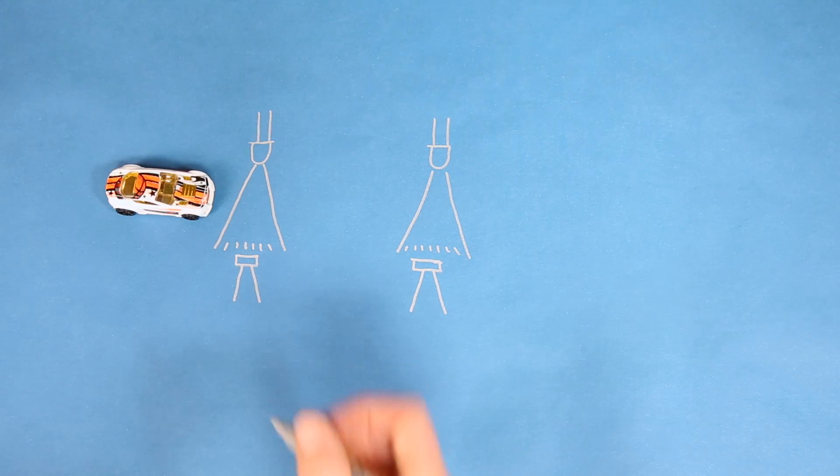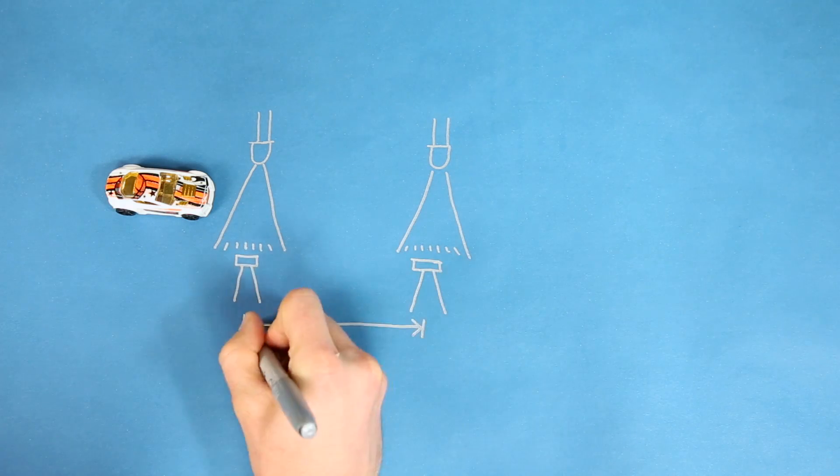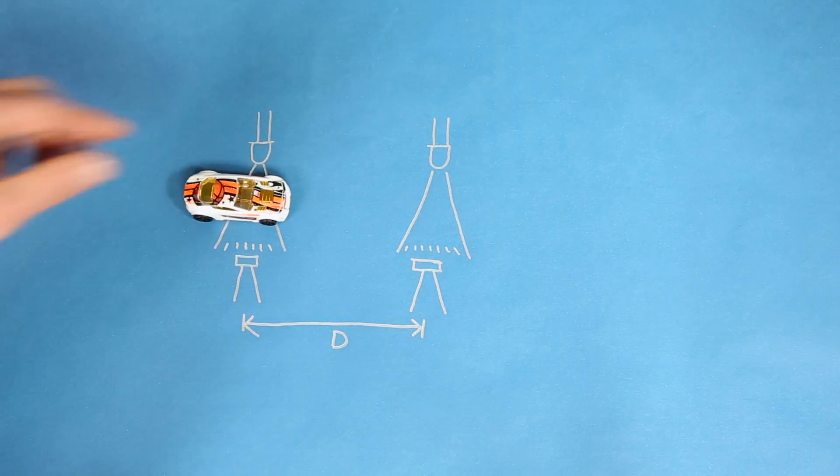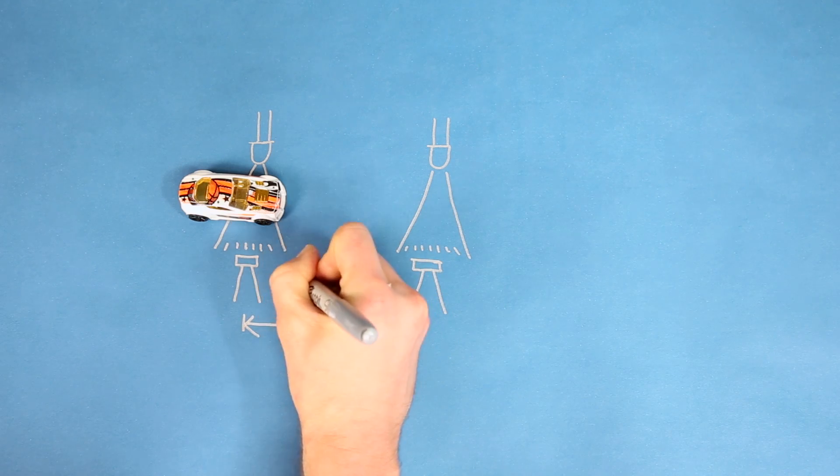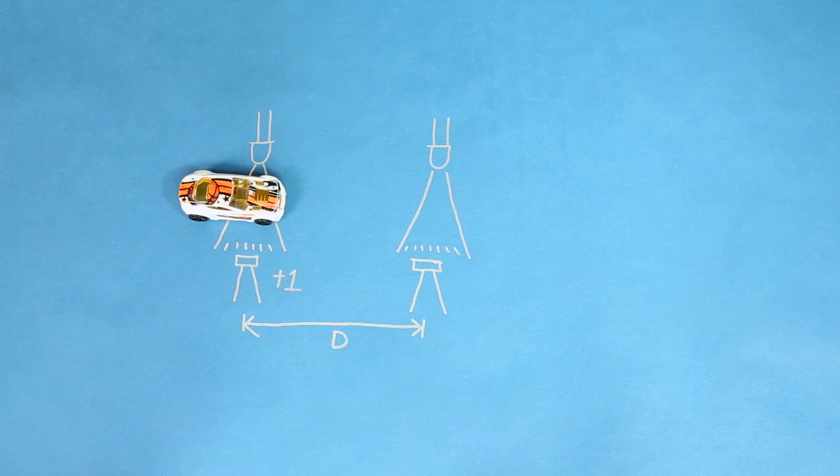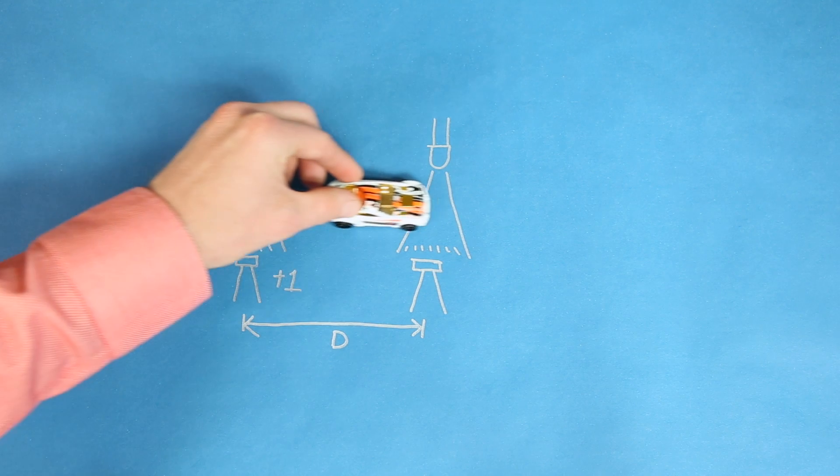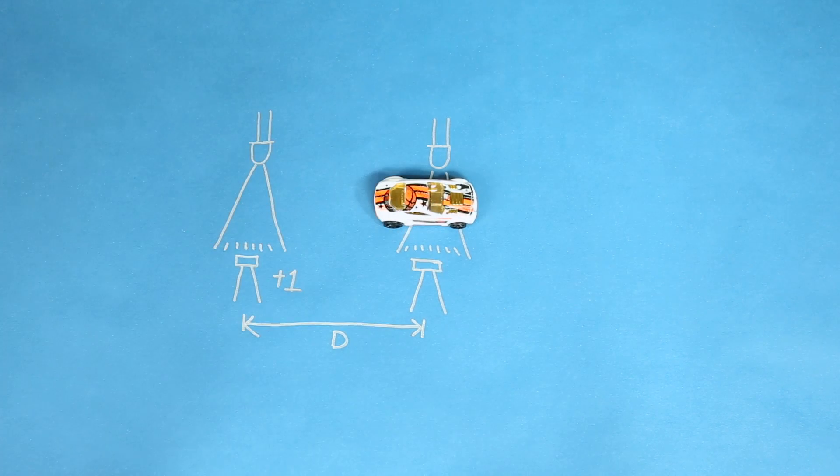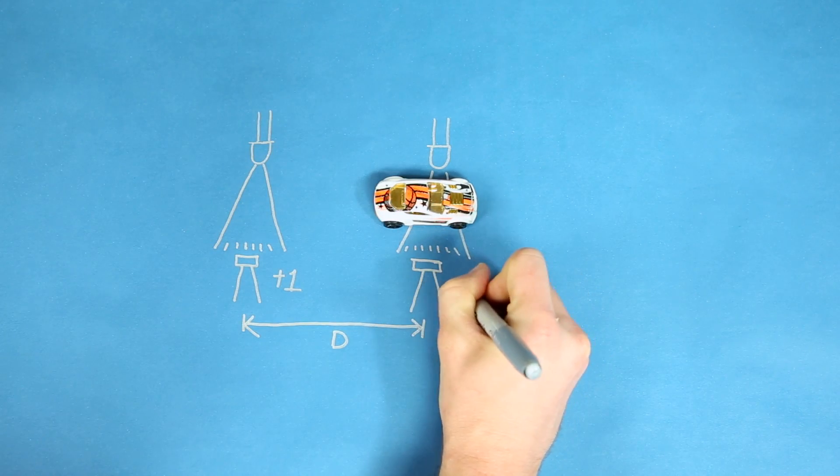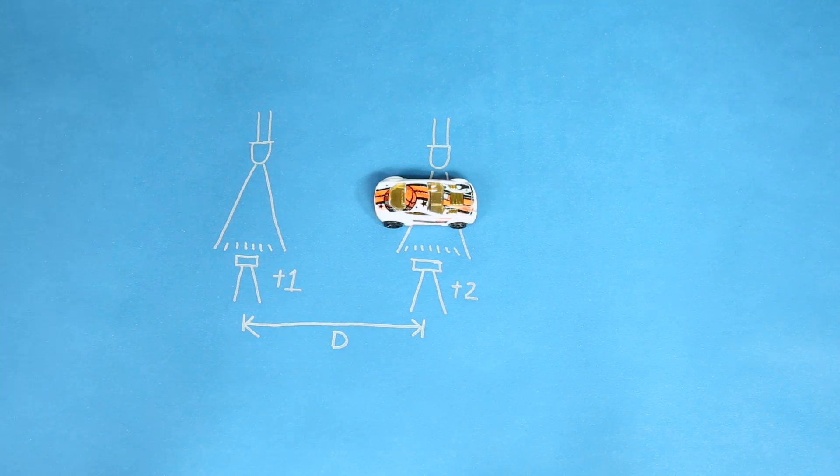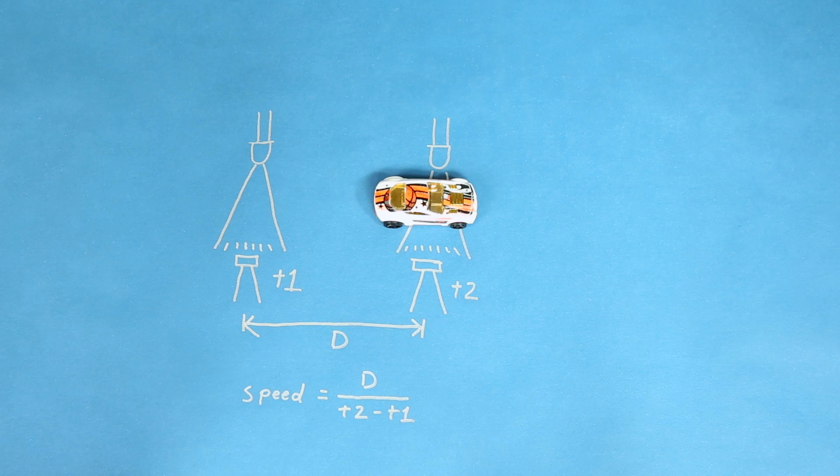We'll have two LEDs shining light on two sensors that are a known distance from each other. When the car breaks the first beam, we read the Arduino's internal clock and store it in variable T1. Then the car will move down the track and break the second beam. When this happens, we'll read the Arduino's clock again and store that in T2. We can then calculate the speed of the car by dividing the distance between the sensors by the time it took the car to travel from the first to the second sensor.